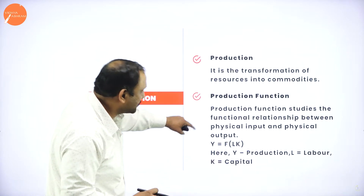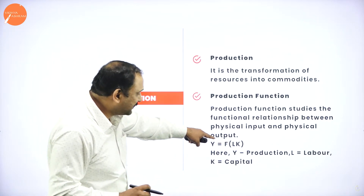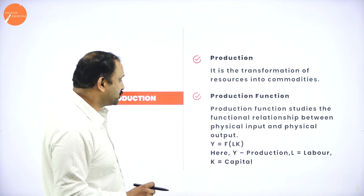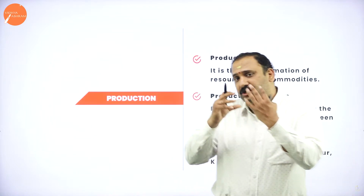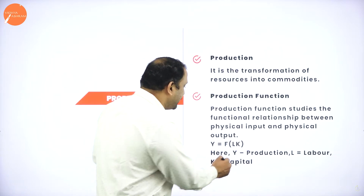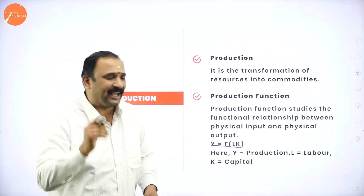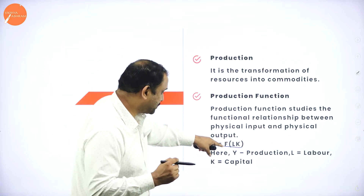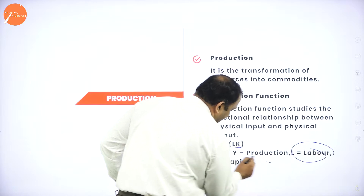What does the production function consist of? The production function consists of the physical relationship between the factors called labor and capital. We give the functionality as Y = F(L, K), where Y is the production, giving rise to the functionality between L and K, which is labor and capital.